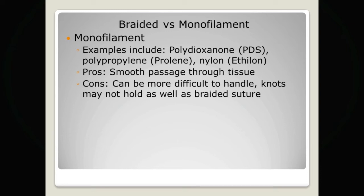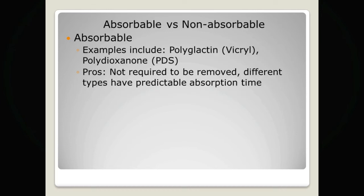The final classification of sutures is absorbable versus non-absorbable. Absorbable sutures include polyglactin and polydioxanone. The advantage is that the suture doesn't need to be removed, as it will be broken down by enzymatic action within the tissue. Different suture types have different predictable absorption times, so you need to select the right suture to hold the tissue while it is healing — and that will be dependent on the tissue type.